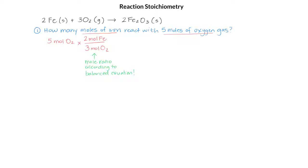We can cancel out the moles of oxygen, which leaves us with moles of iron. And we end up with 3.33 moles of iron that can react with 5 moles of oxygen gas.